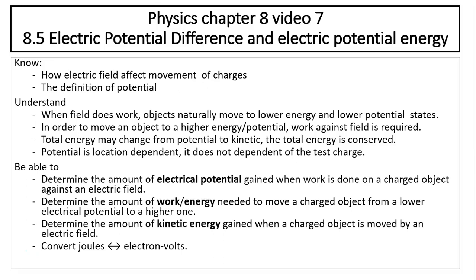The objectives are: know how electric fields affect movement of charges; know the definition of potential; understand that when the field does work, objects naturally move to a lower energy or lower potential state. In order to move an object to a higher energy potential state, work has to be done against the field. The total energy may change from potential to kinetic, and the total energy is conserved. The potential is a location-dependent quantity — it does not depend on the test charge. Be able to determine the amount of electric potential gained when work is done on a charged object against the electric field, determine the amount of work or energy needed to move a charged object from a lower electric potential to a higher one, determine the amount of kinetic energy gained when the charged object is moved by the electric field, and be able to convert between joules and electron volts.